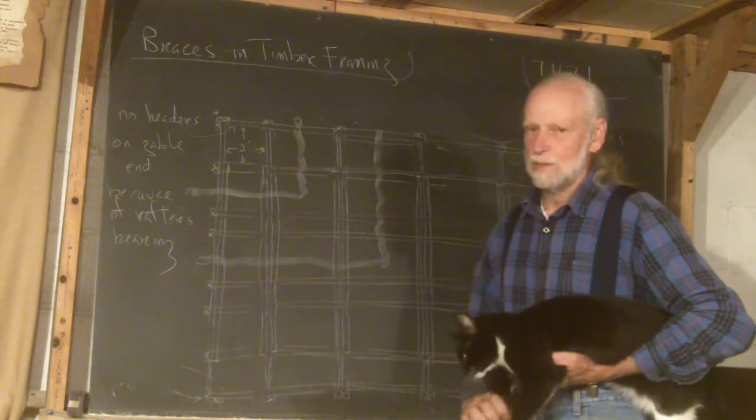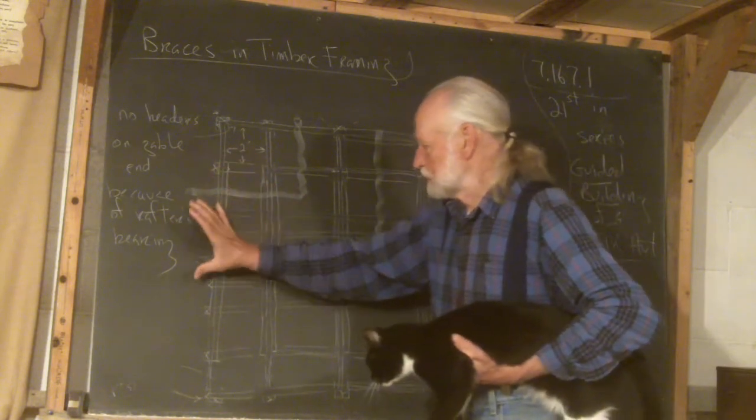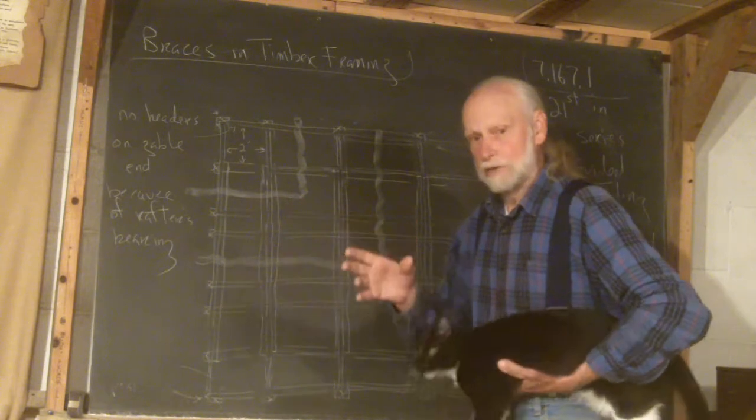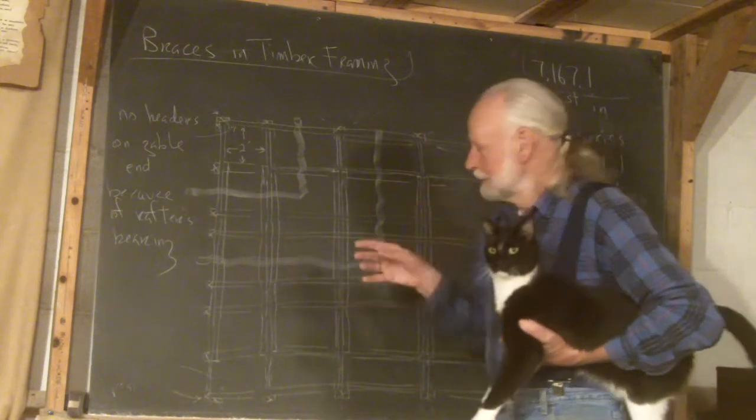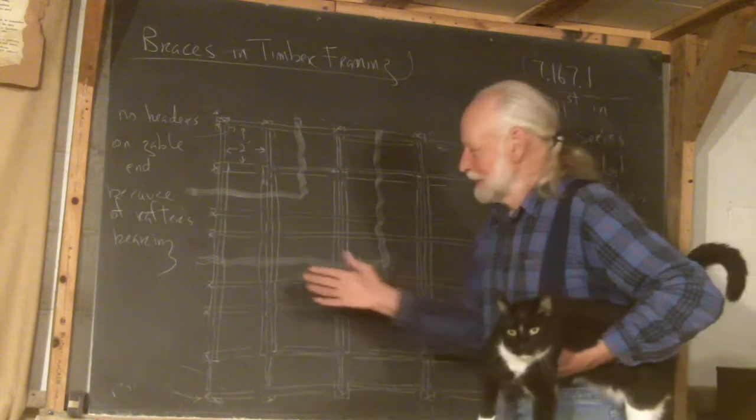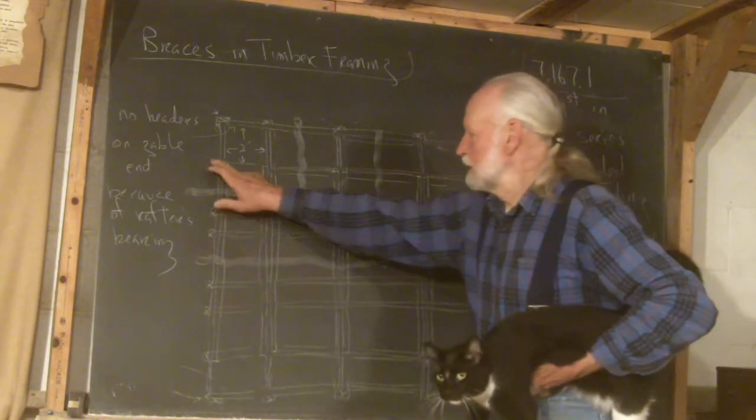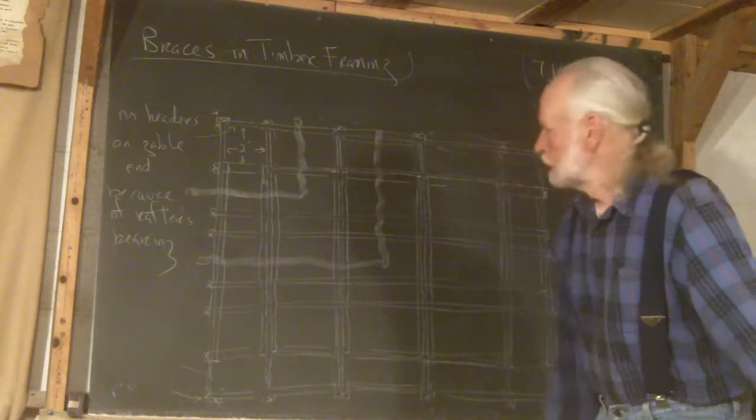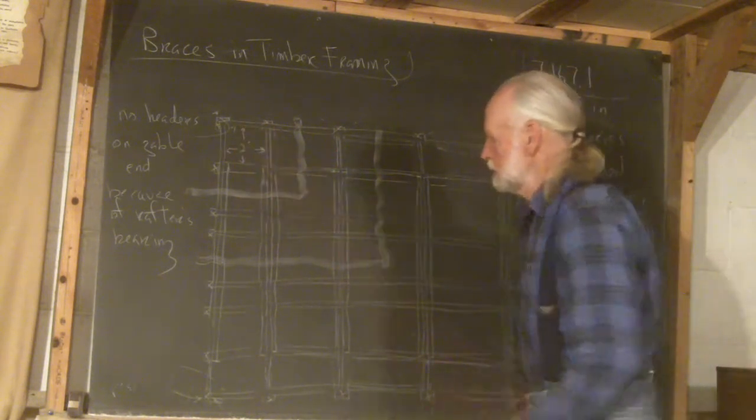Now, why that is is because one of the rafters is going to bear right down there on the end. And it would be bearing on the header itself, which is nailed. In effect, the rafter would be bearing on nails. I can't have that. So that makes this side different from this side.